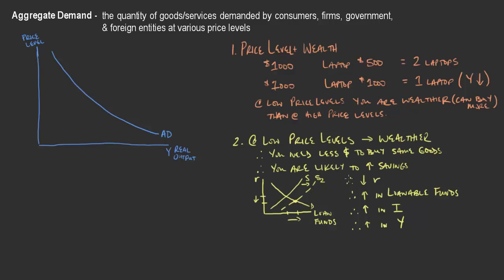The exact opposite would be true as well — you can think through this in reverse. At high price levels, we would see a decrease in Y, and at low price levels we would see a larger increase in Y. This is yet another reason the aggregate demand curve would be a downward sloping curve.